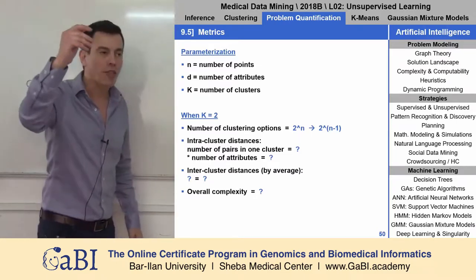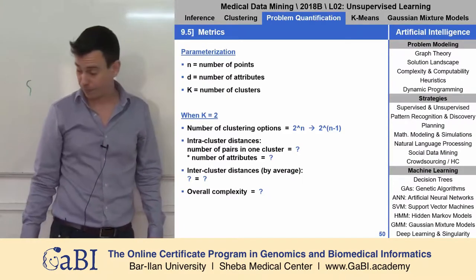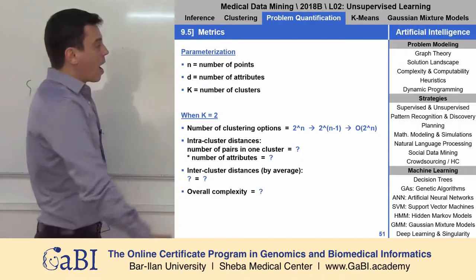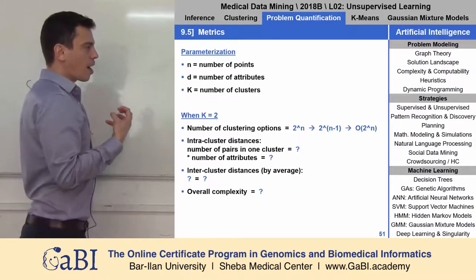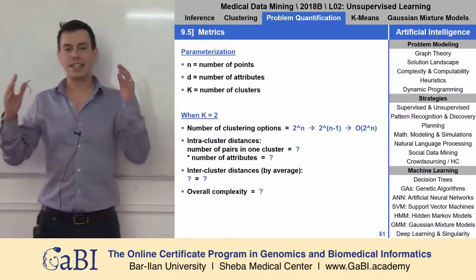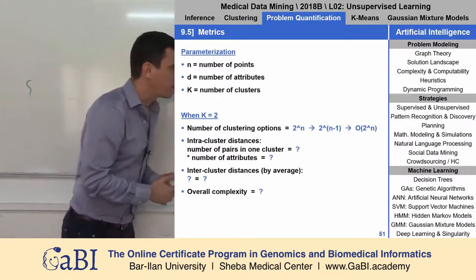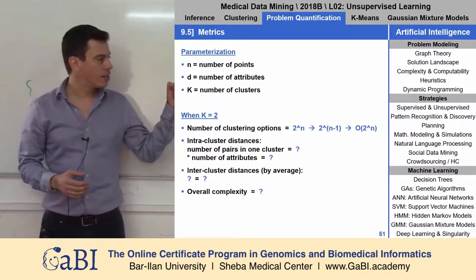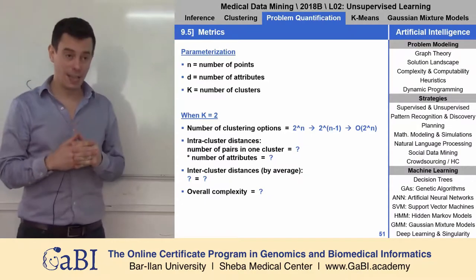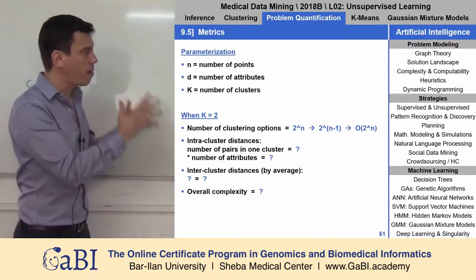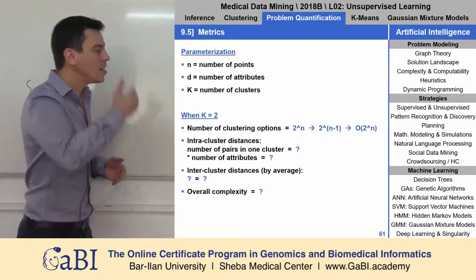So if we have 1,000 patients, it's two to the power of 999. In computer science, we annotate that — we say it doesn't matter that it's n minus one, we look at the scale. So we say it's a scale of two to the power of n, and we annotate it with the capital letter O. This is the scale of that problem — the number of clustering options is O of two to the power of n.